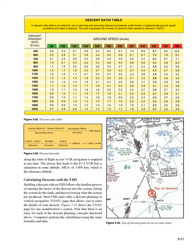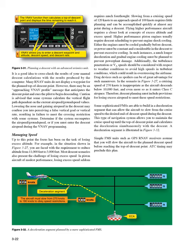Figure 3-31 shows the VNAV page for one manufacturer's system. Note that there is an entry for each of the descent planning concepts discussed. Computers perform the calculations using the same formulas and data. It is a good idea to cross-check the results of your manual descent calculations with the results produced by the computer. Many en-route units do not display a waypoint for the planned top-of-descent point; however, there may be an approaching VNAV profile message that anticipates the descent point and cues the pilot to begin descending. Caution is advised: some systems calculate the vertical flight path dependent on the current airspeed/ground speed values.